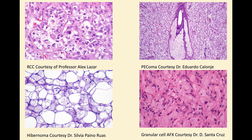I like this case very much — a hibernoma posted recently. It's not something one sees very often, and this is a real beauty showing the multivacuolated adipocytes. But elsewhere the tumor showed very typical features of a lipoma. And this is a great case that Danny Santacruz shared with me about 20 years ago: a very typical AFX which showed focal granular cell change. If you had any problems with differential diagnosis, CD10 expression might be helpful.